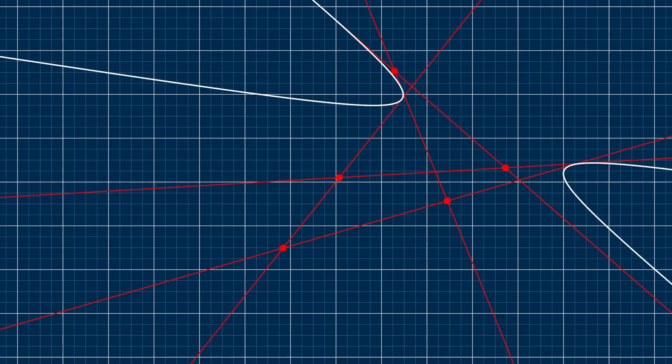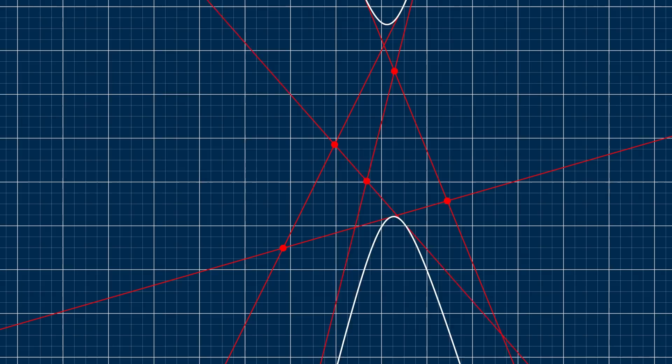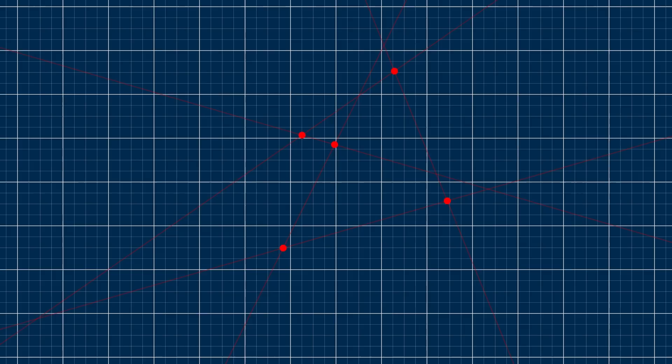But what if I told you that not only does this work with five points, or five tangents, but you can describe conics with any combination of points and tangents, as long as there's five total.